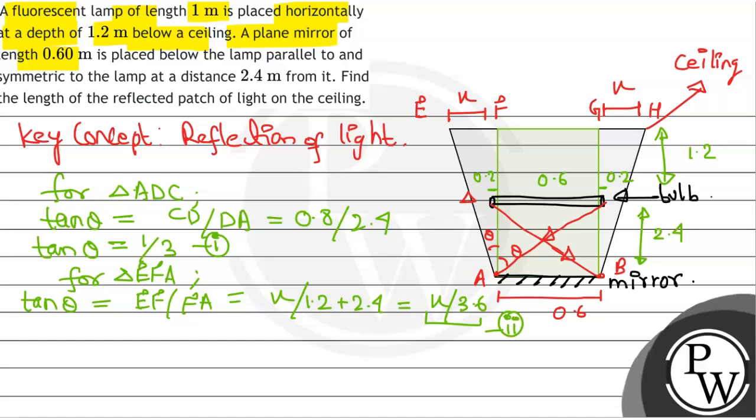Now equating 1 and 2, we will have 1 over 3 equals X over 3.6. So from here, X equals 1.2.